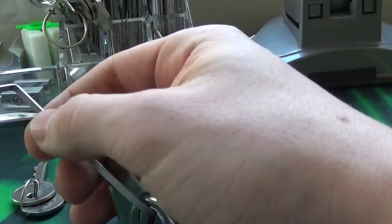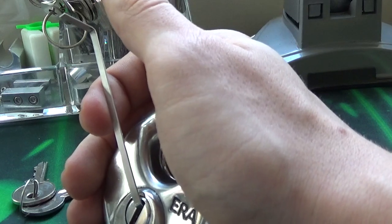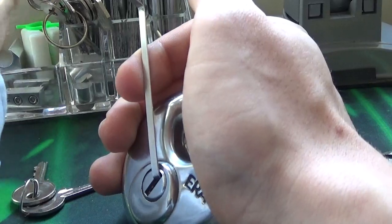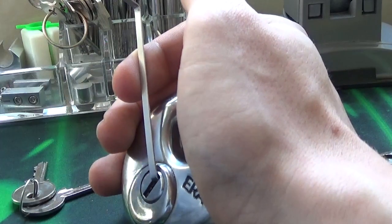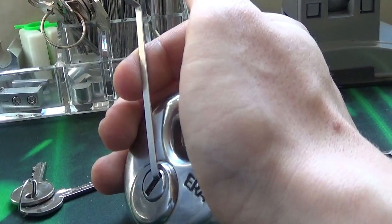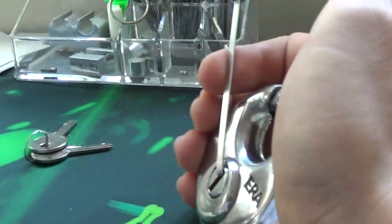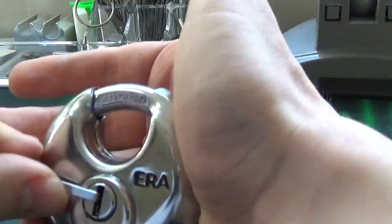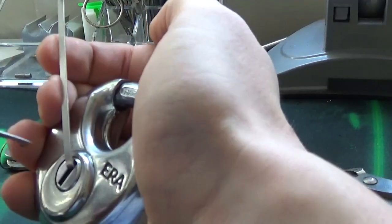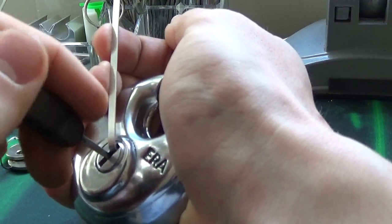Those security pins do help with resisting the old rakes. But it says it's anti-bump. So I want to just get the diamond, and see if we can zip it, zip it open. Should help to replicate anti-bump.